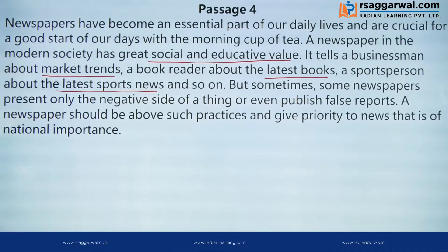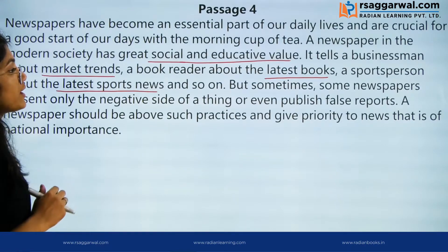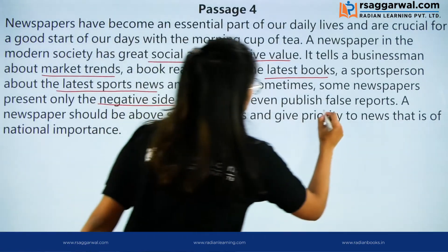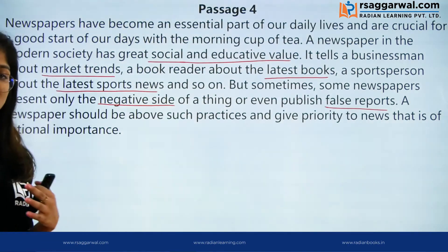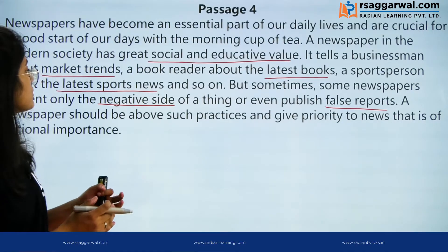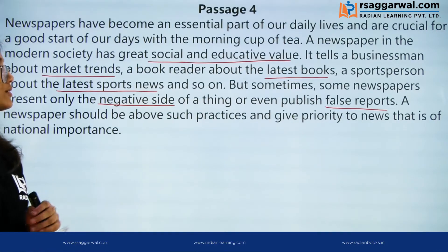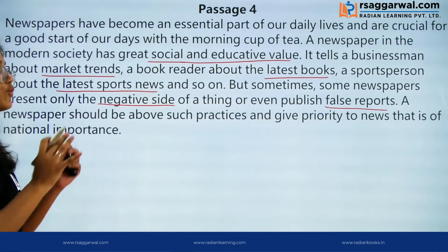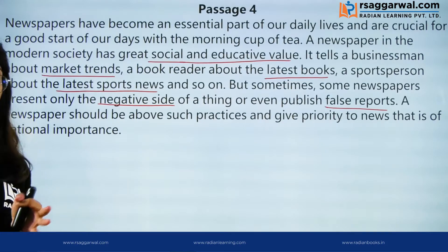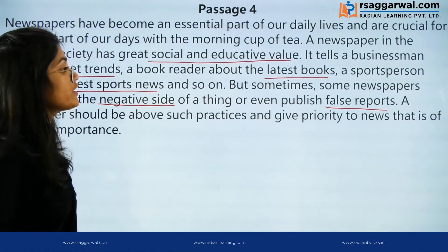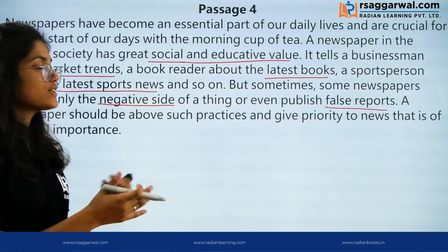But sometimes newspapers present only the negative side of a thing and even publish false reports. In sari information ke bawajud, kabhi kabhar newspapers kya karte hain — aapko kisi particular news ki sirf negative side batate hain ya phir false reports publish karte hain, jis se log mislead ho sakte hain. Jaise sirf ek political party ko support karna ya kisi particular business ko promote karna — to they may mislead the people. Newspaper ka basic kaam hota hai aapko factual information provide karna. Woh sirf aapko facts provide karte hain, aur phir decision aap par hota hai. So newspapers should be above such practices — unhe aise kaam nahi karne chahiye, to publish false reports and to provide only the negative side of a particular news.